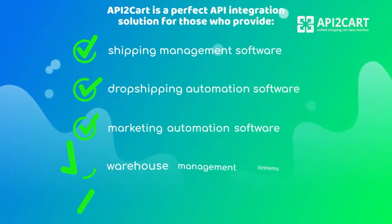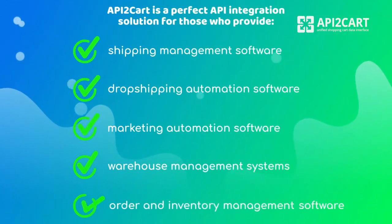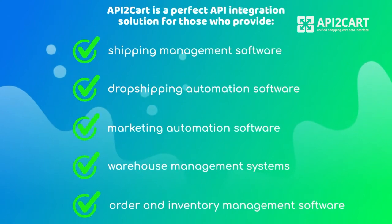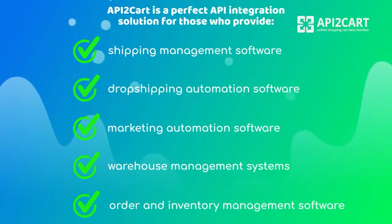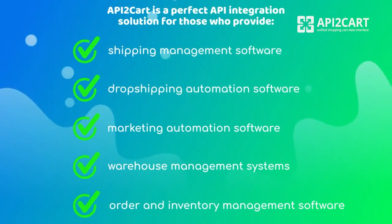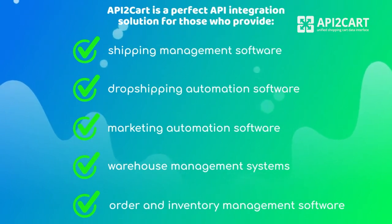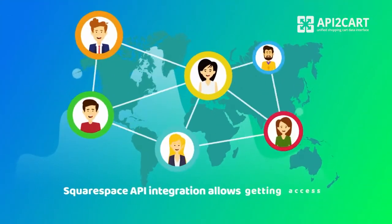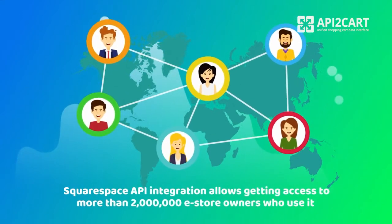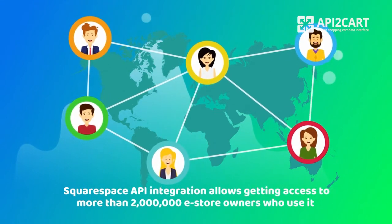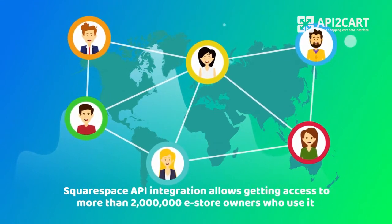API2Cart is a perfect API integration solution for those who provide shipping management, dropshipping automation, marketing automation, warehouse management, order, and inventory or multi-channel software. Squarespace API integration allows getting access to more than 2 million e-store owners who use it for their business and increase your software profits dramatically.